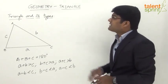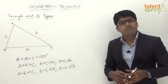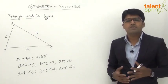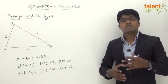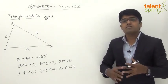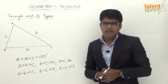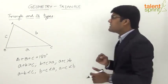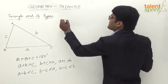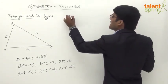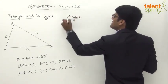Now let us look at the types of triangles. There can be different types of triangle based on the relationship between angles or based on the sides. Based on angles, there are three types of triangle.